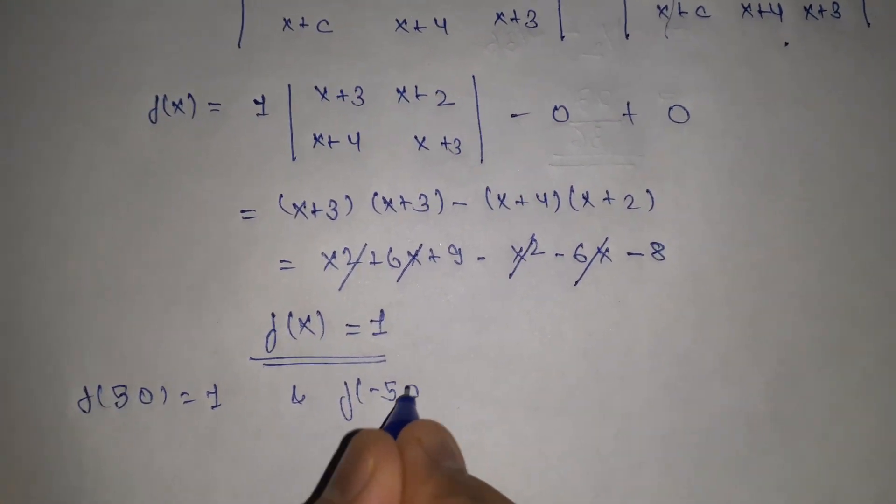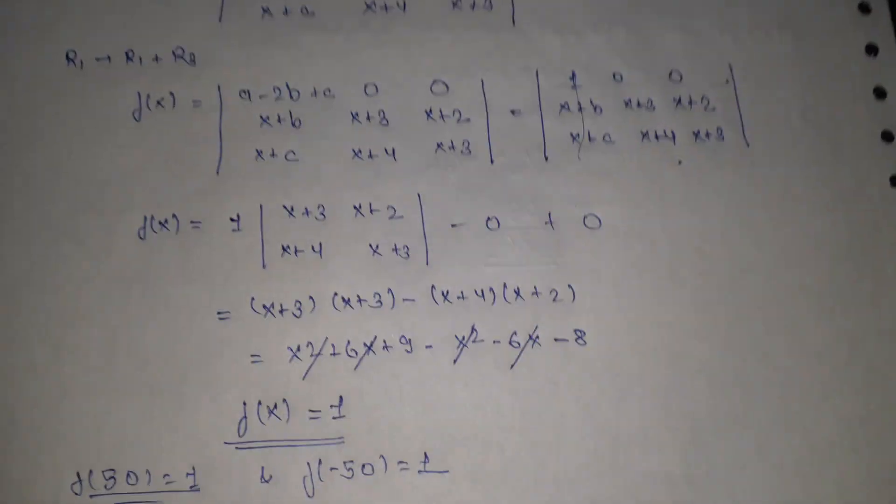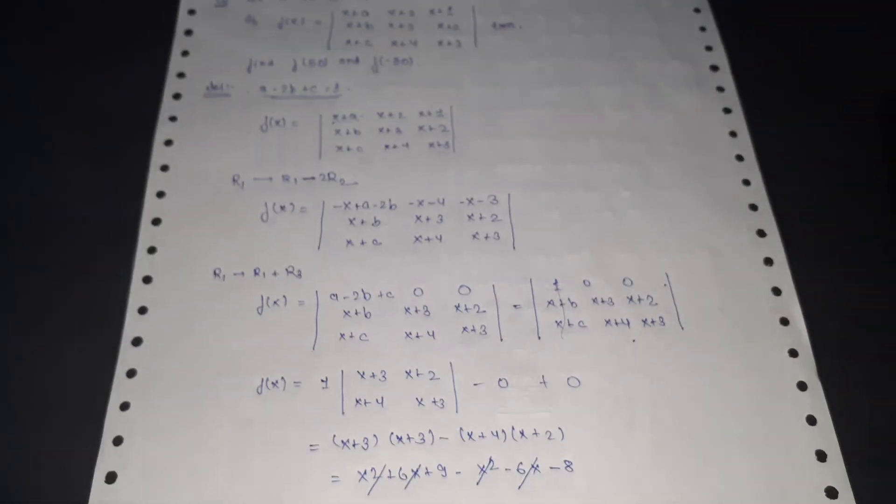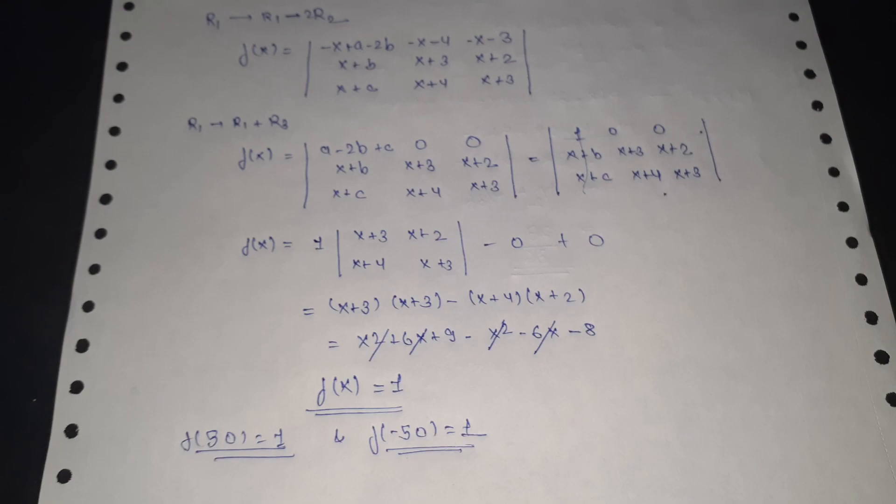Therefore f(50) equal to 1 and f(minus 50) is also 1. Hope you get the concept and find the video useful. Do like and share. For more videos, do subscribe to the channel. Thank you.